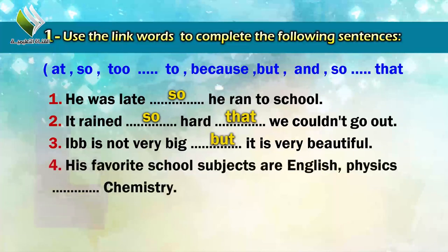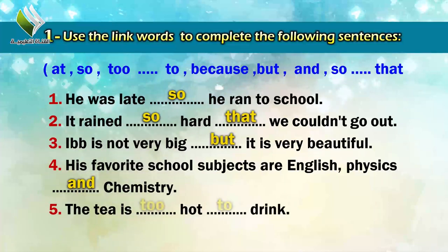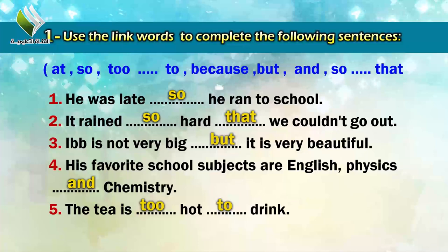Number four: 'His favorite school subjects are English, Physics, and Chemistry.' The answer will be 'and'. Number five: 'The tea is too hot to drink.' The first answer is 'too' with double O, and the second answer is 'to' — to drink — with only one O.